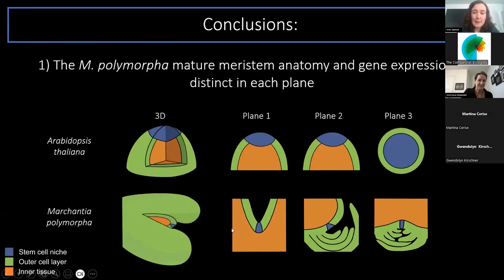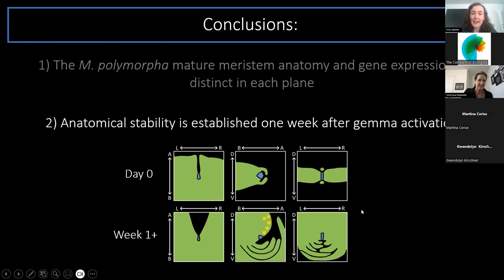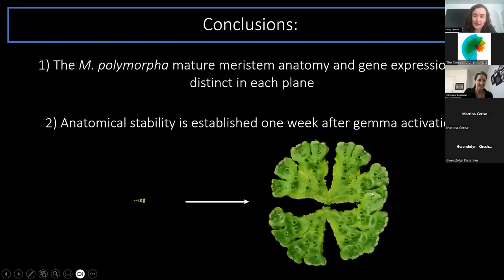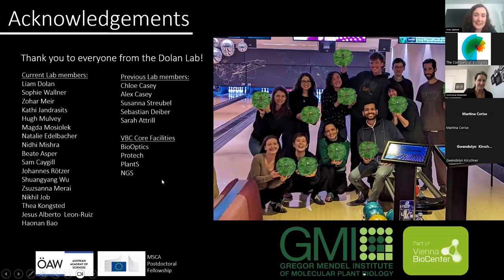To conclude, the Marchantia mature meristem anatomy and gene expression is distinct and asymmetric in each plane, unlike Arabidopsis thaliana. The anatomical stability is established one week after gemma activation. This leads us to conclude that the gemma meristem is an arrested meristem that undergoes substantial anatomical rearrangement during the first week of growth, before it reaches a stable structure which then produces the mature body of the plant. I'd like to thank everybody in the Dolan lab, particularly Liam for his support and Sophie for help generating the lines, and the VBC core facilities, who are amazing.